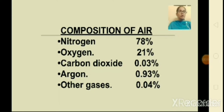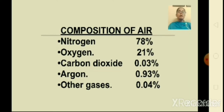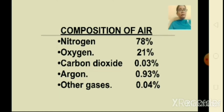Now let us revise the composition of the atmosphere. The atmosphere is a mixture of various gases. Nitrogen and oxygen are the two gases which make up the bulk of the atmosphere. Nitrogen is 78 percent available and oxygen is 21 percent available. The other gases found are carbon dioxide, helium, ozone, argon, and hydrogen, all found in lesser quantities.